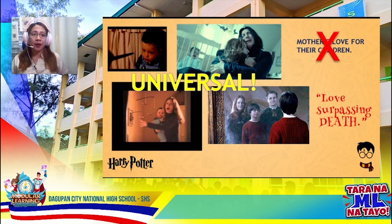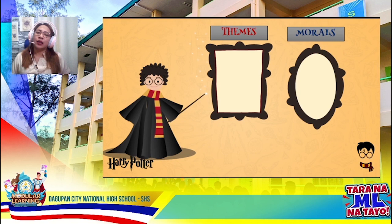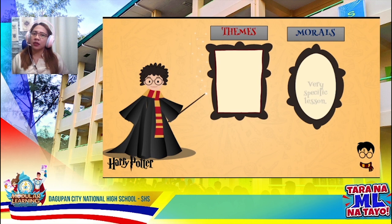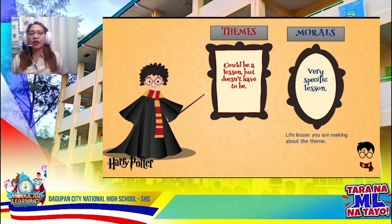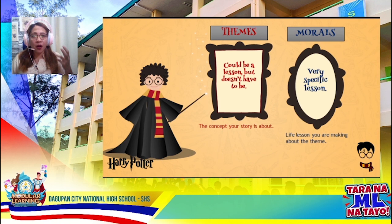Now, moving on — let us define themes and morals. Most of the time we confuse themes with morals and vice versa. The moral of a story is a very specific lesson; usually it is a life lesson you are making about the theme, so the moral came from the theme of the story. When we say theme, it could be a lesson but it doesn't have to be — it is actually the concept of your story. Your moral lesson came from the theme. Because the theme is universal, the moral is specific; you get the moral lesson from the universal theme you've given your audience.